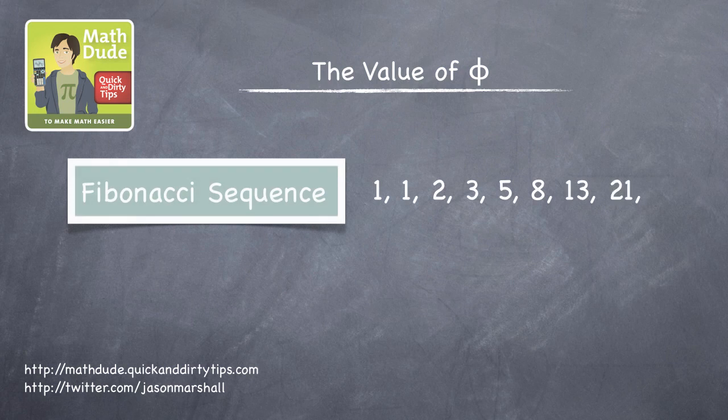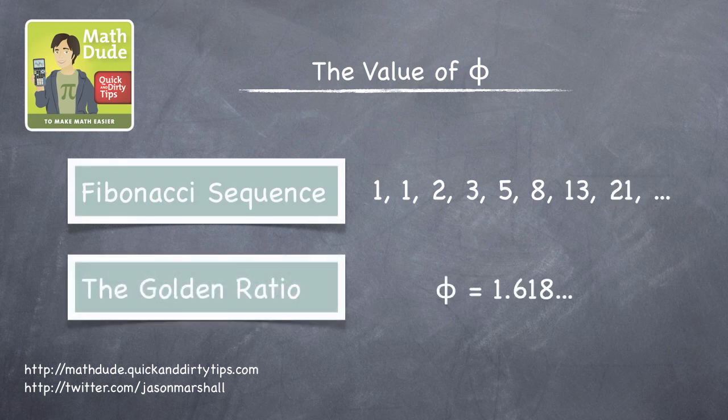In that episode, we looked at the relationship between the Fibonacci sequence and the golden mean, phi, a number equal to about 1.618.